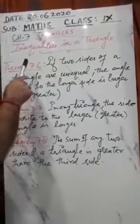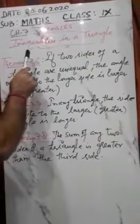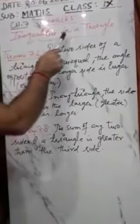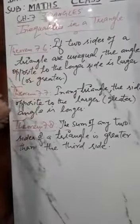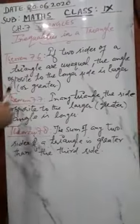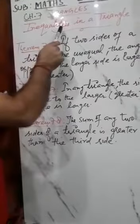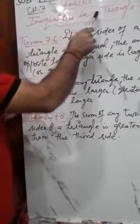Good morning class 9. This is a new topic: inequalities in a triangle, Chapter 7. The last topic of this chapter is inequalities in a triangle.